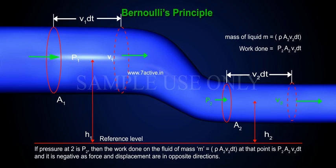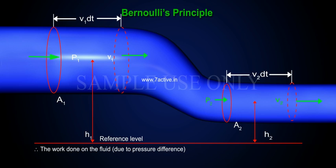If the pressure at point 2 is P2, the work done at that point is P2 A2 V2 DT and it is negative as force and displacement are in opposite directions.